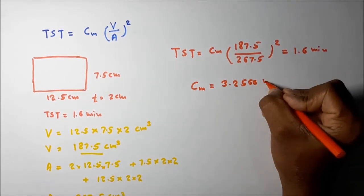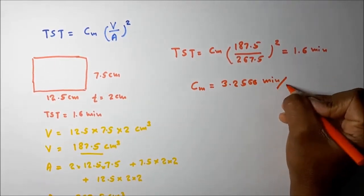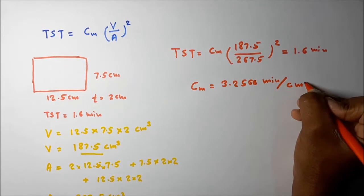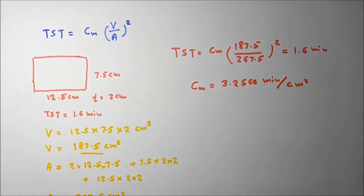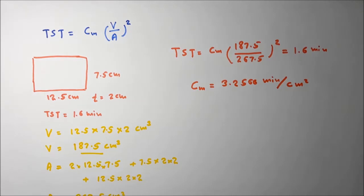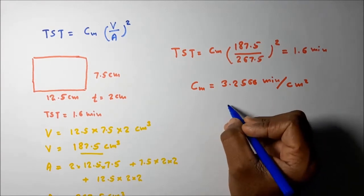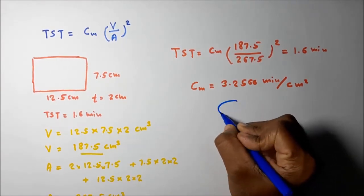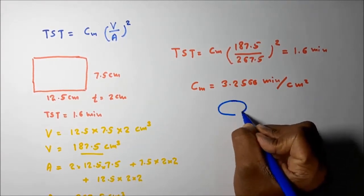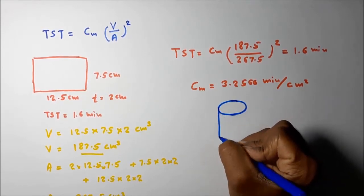The unit of Cm is minutes per square centimeter. This is the Cm mold constant. Now that we know the Cm mold constant, we have to design the cylindrical riser which must give a solidification time of 2 minutes. The height-to-diameter ratio is 1:1, meaning if the diameter is D, the height should also be D.